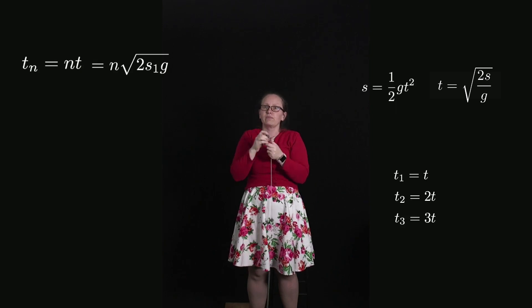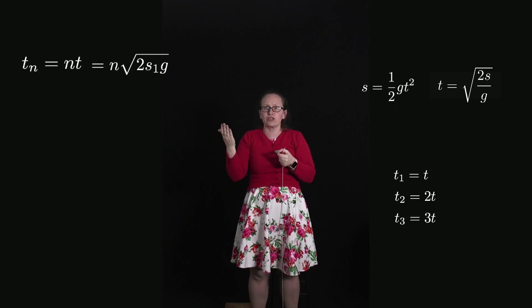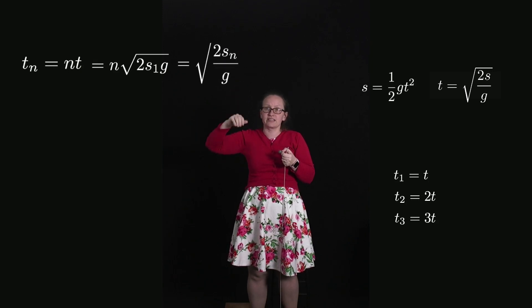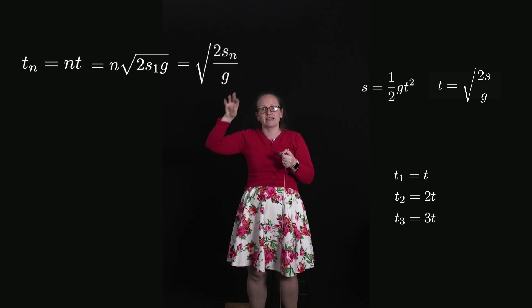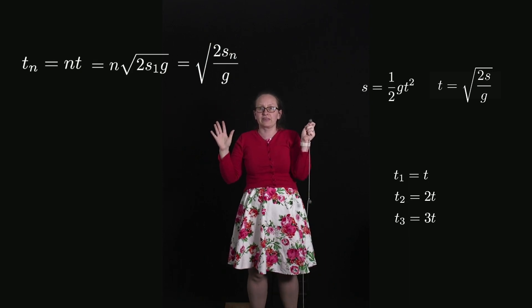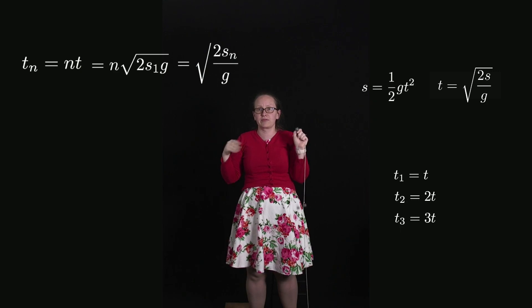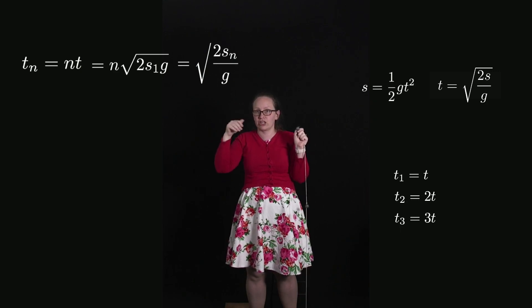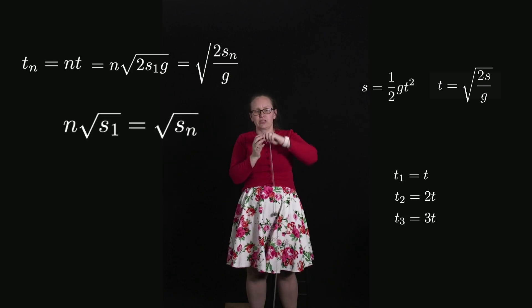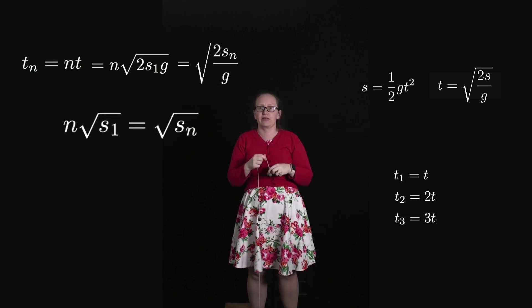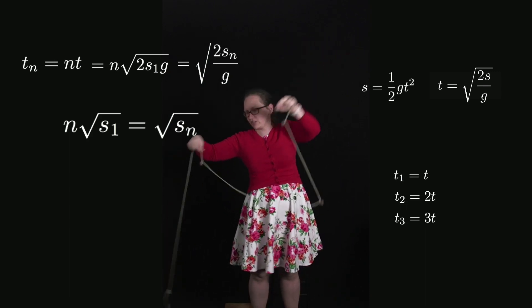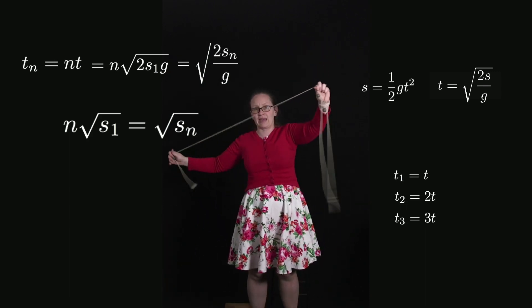This is also equal to the square root of 2 times the distance that the nth mass has to fall, sₙ, divided by g. Taking the last part of that equation and canceling out the common terms, we've got a common root 2g. We've got n times the square root of s₁, which is this distance, has to be equal to the square root of sₙ, which is the distance between the first mass and the nth mass.